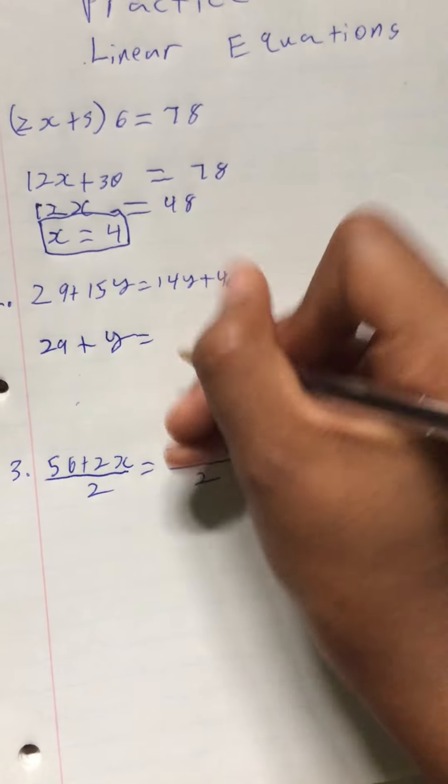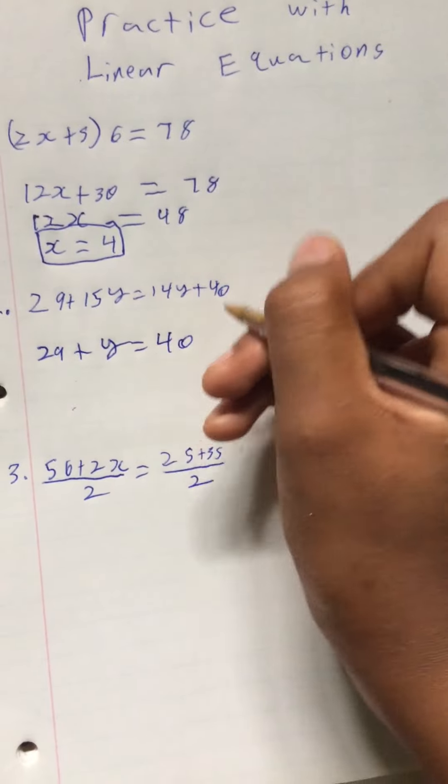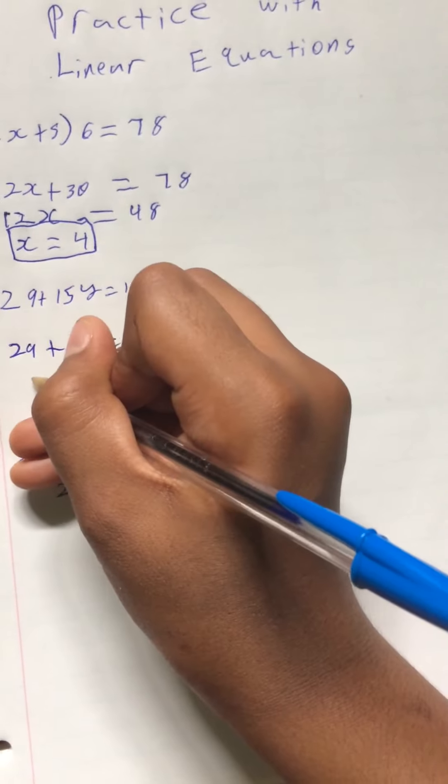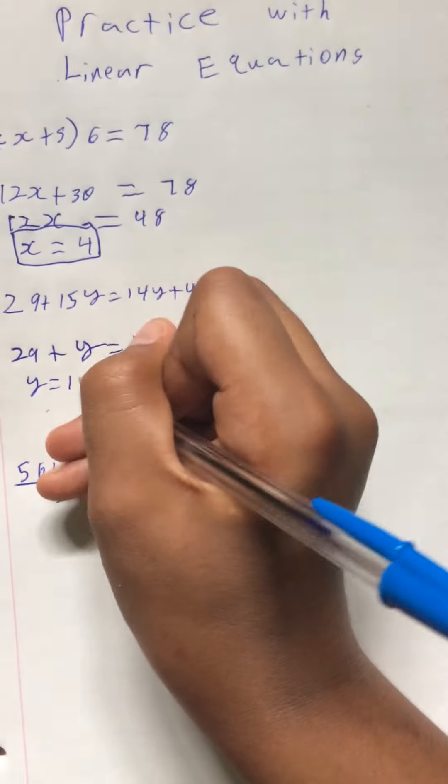And then since this is cancelled out, that just equals 40. Then 40 minus 29 is 11. So y equals 11.